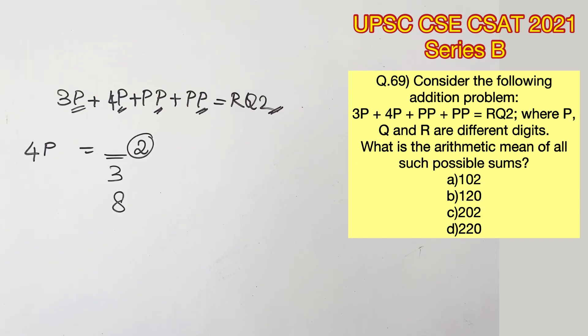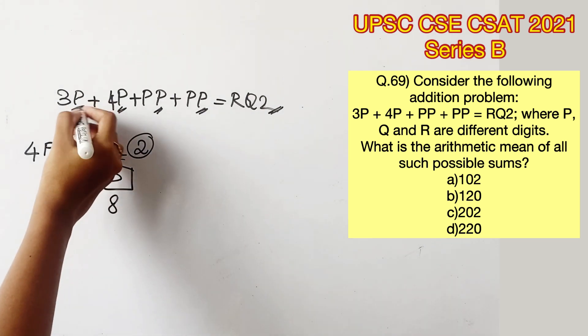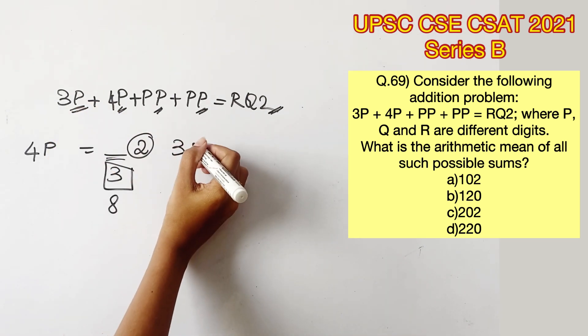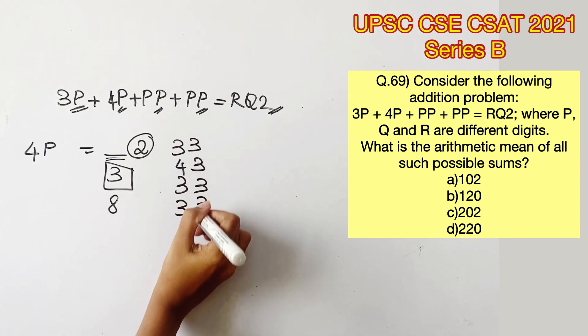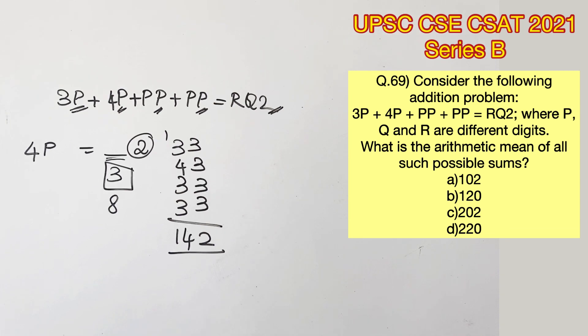So now we have found out the possible values for P, which is 3 and 8. Now let's take 3 in the place of P. Substituting in all the terms, we will get 33 plus 43 plus 33 plus 33. This will give us 142.